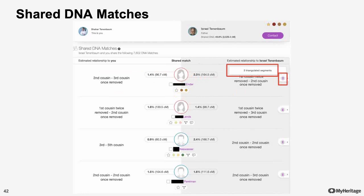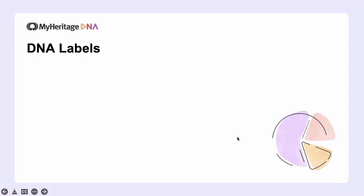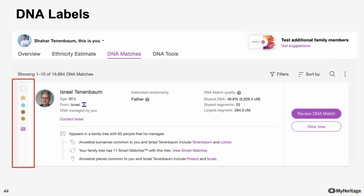We've recently made this tool even more useful by introducing one of our latest additions to the shared matches component, and that is DNA labels. DNA labels — we've mentioned them a few times already. They can be used for filtering matches, they're seen in the review match page, and also for shared DNA matches. But what are they, how do we use them, and why?